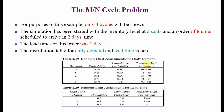We have two distribution tables: one for daily demand and one for lead time. Using the daily demand table we can find the demand for each particular day, and using the lead time table we can find the difference between placement and receipt of an order. For this example, only three cycles will be shown — that is, three weeks of five days each.